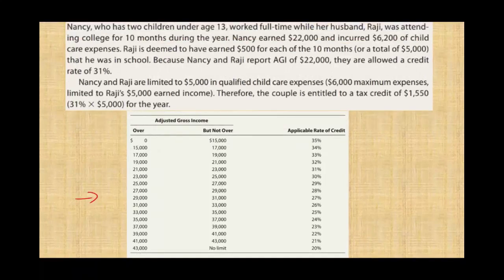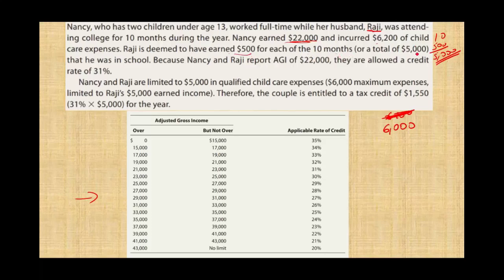Nancy has two children under age 13 and worked full-time while her husband Raji was attending college for 10 months during the year. Since they have two children, Raji is deemed to be earning $500 per month, so he's deemed to have earned $5,000 for the year — they both have earnings. Nancy earned $22,000 and incurred $6,200 of child care expenses. Since the maximum for two children is $6,000, we cap the expenses there. Their combined AGI is $22,000, which falls between $21,000 and $23,000 on the table, giving them an applicable credit percentage of 31%.